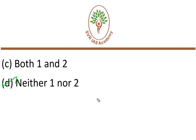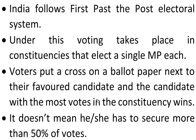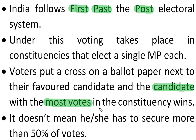Now let us see the explanation for this answer. In India, the electoral victory in Lok Sabha as well as State Assembly is decided based upon the First Past the Post electoral system. In this system, voters vote for a candidate and the candidate needs to secure the most number of votes compared to other candidates. It does not mean the winning candidate must get 50% or more votes — even by securing less than 50%, a candidate can win an election. That is the First Past the Post electoral system, so statement 1 is wrong.